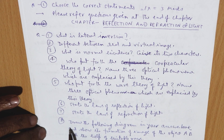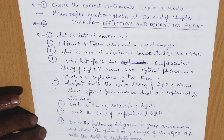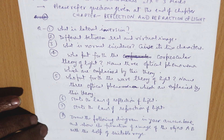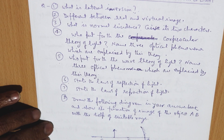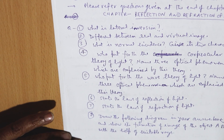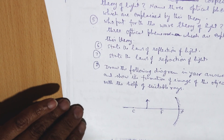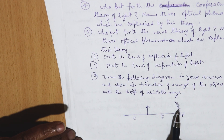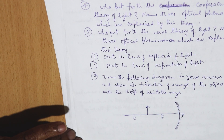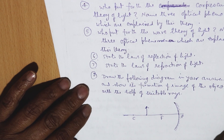Next question: draw the following diagram in your answer book and show the formation of image of object AB with the help of suitable rays. The mirror is shown and the object is placed between the center of curvature and the focus. You have to draw the ray diagram and show where the image is formed. This is a very important question — you have to practice this one.